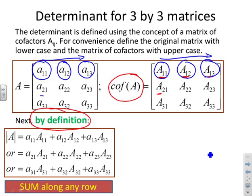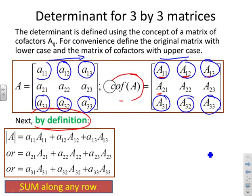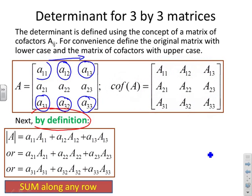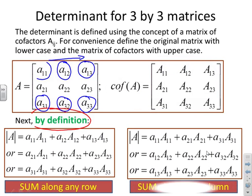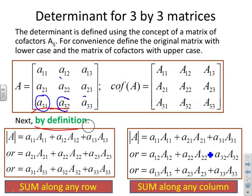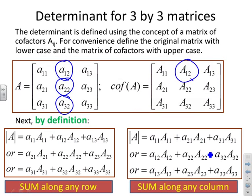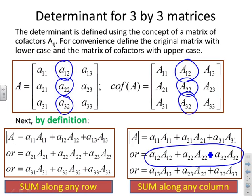I could have gone along the third row instead, using A31, A32, A33 and the corresponding cofactors. An alternative to using rows is to use columns. For example, I could take the second column — A12, A22, A32 — and multiply each by the corresponding element in the cofactor matrix. So you can expand along any row or any column, multiplying the coefficients in the matrix by the corresponding cofactors and adding them all together. This is the definition of the determinant.